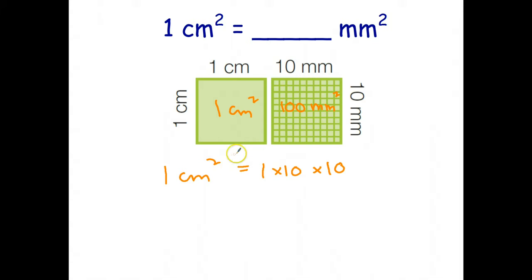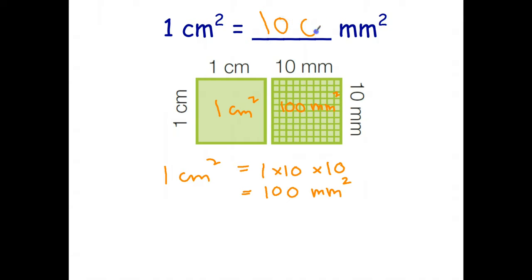So if it's centimeters squared, I've got to multiply by the conversion factor twice: one centimeter is 10 millimeters, and one centimeter is 10 millimeters. So 10 times 10 is 100, and the units of course are square millimeters. Students want to think that because they see centimeters and millimeters, the conversion is just 10. But because these are square centimeters and square millimeters, the diagram shows you that it has to be 100. And this is the easiest way to calculate that.